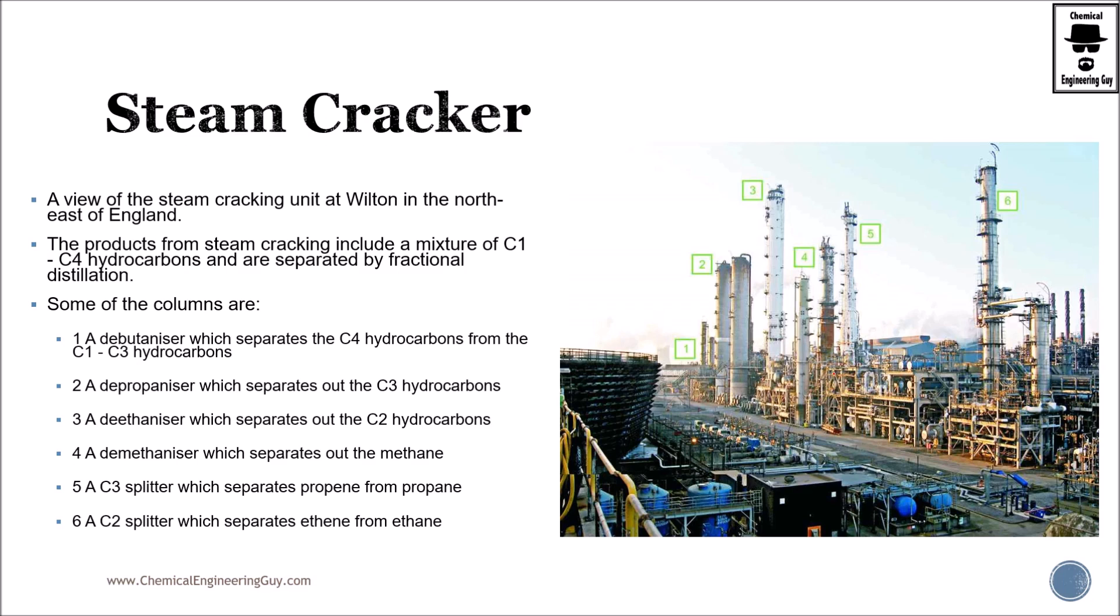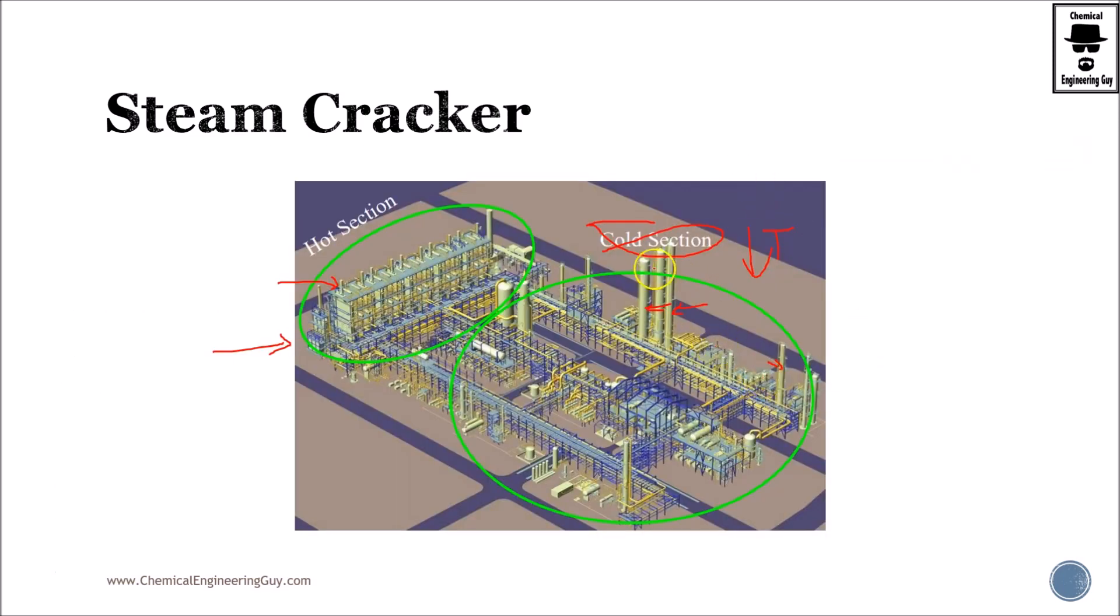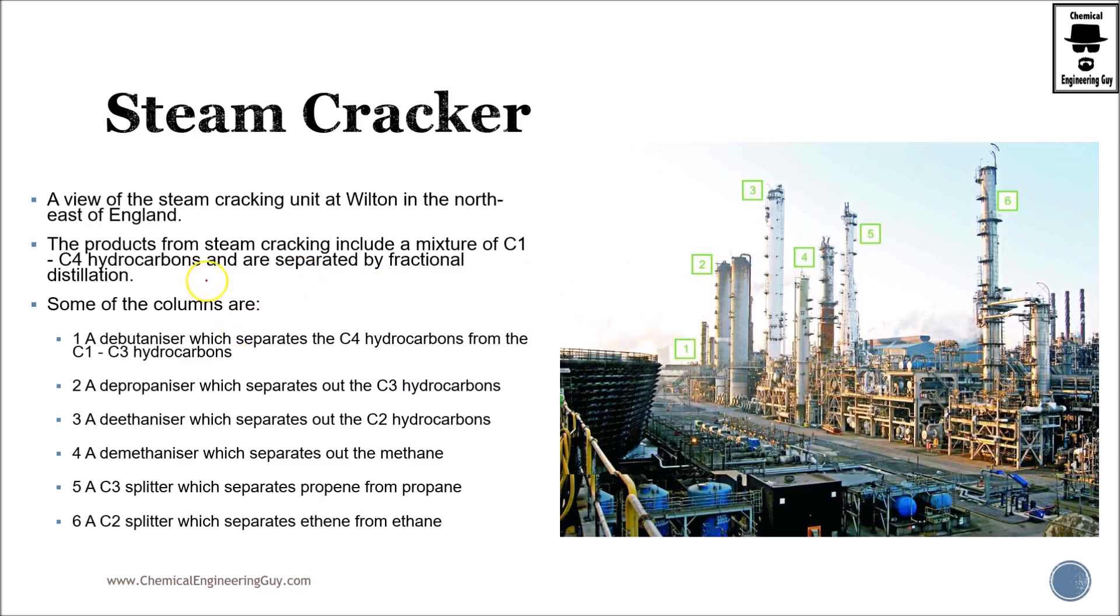Let me show you this image. This is a steam cracking unit at Wilton in the northeast of England. You can see there are plenty of towers. What are those towers? Is this the hot section or the cold section? Well, stated before, these are the distillation columns, therefore this must be in the cold section.